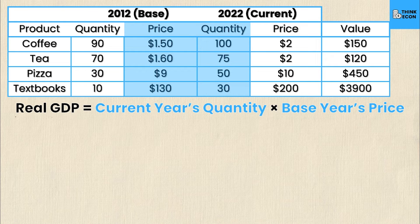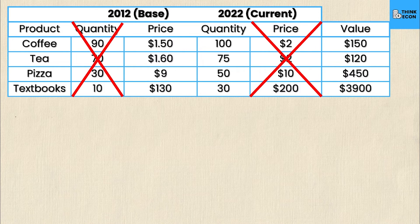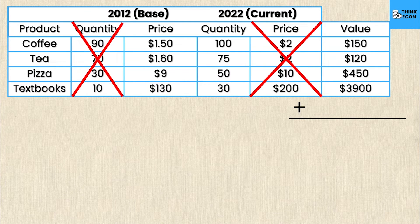Notice that in this calculation I don't use the base year quantity or the current year price — they're completely useless for real GDP. I'm only concerned with base year price and current year quantity. After summing up all these values, I get a total real GDP of $4,620.